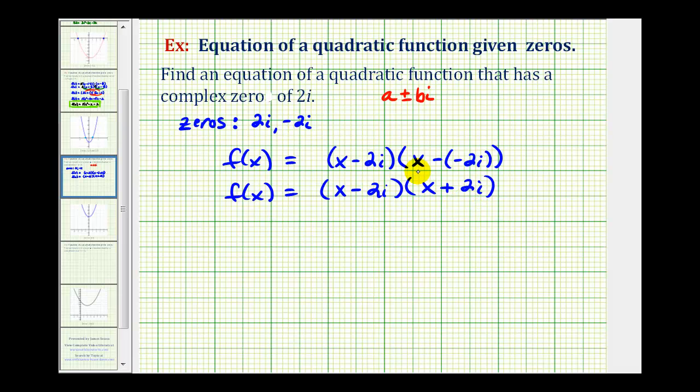Now we'll find this product. Remember, there will be four products: 1, 2, 3, and 4. So we'll have f(x) = x², and then we'll have +2xi - 2xi, and then -4i².